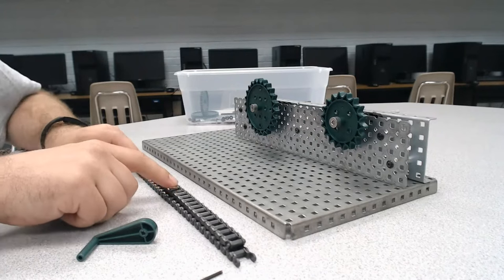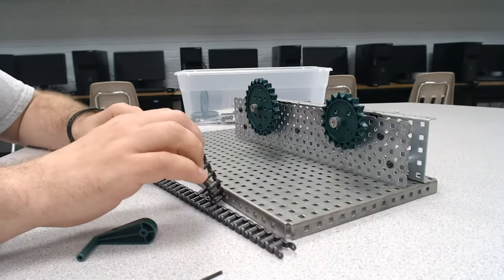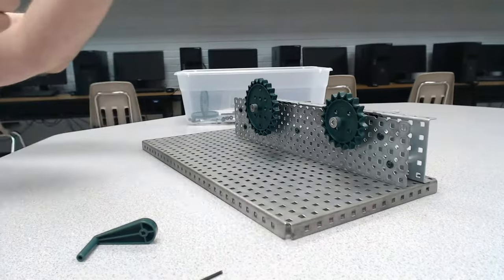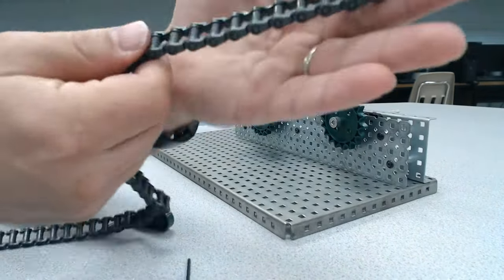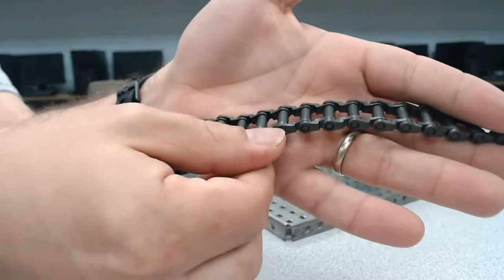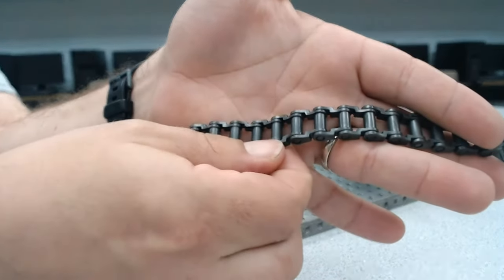If we look up close at the chain, all we would have to do is kind of wedge a nail right here, and then twist, and we can pop that chain and make it shorter.